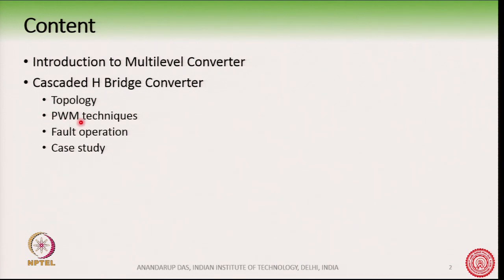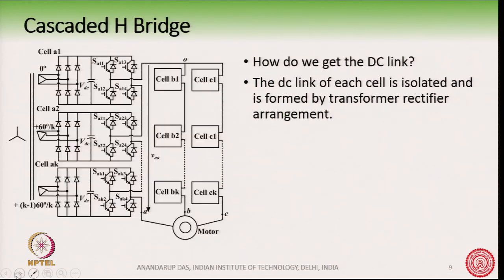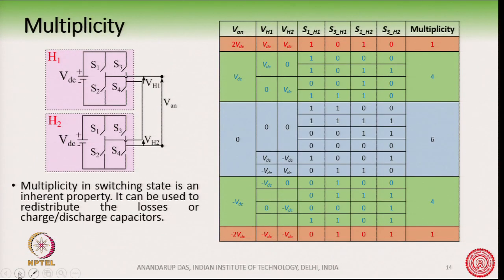Today we will talk about the PWM techniques on cascaded H-bridge converter. If we quickly go over: this is one 3-cell CHB full converter where there are 3 cells in each leg and there are 3 phases. This is a more closer representation of how the converter looks like, where we have shown how the DC bus is formed. There are these different types of levels and how they are generated using different combinations of switches, and we also talked about the multiplicity of switches.